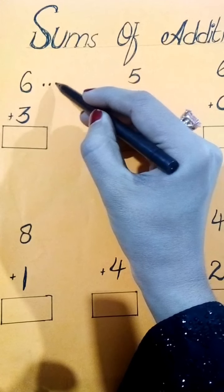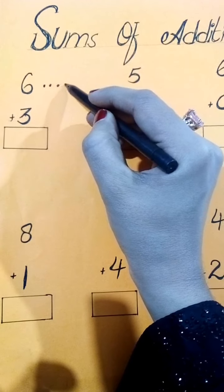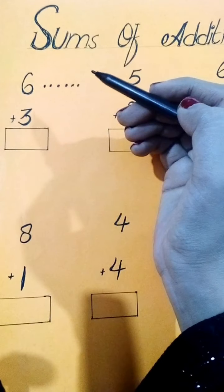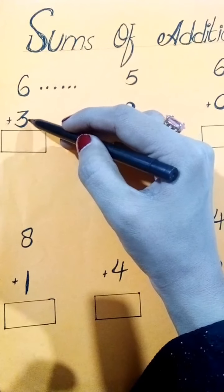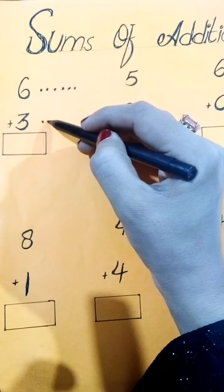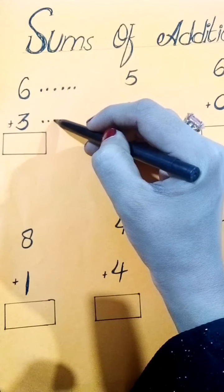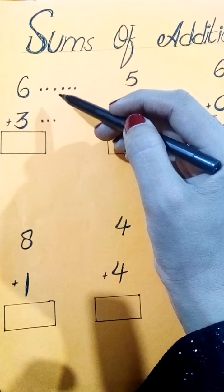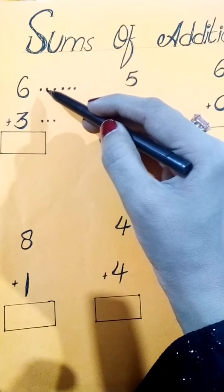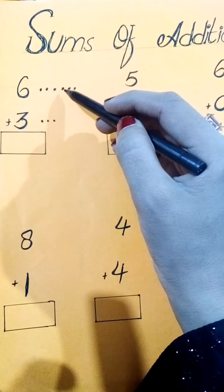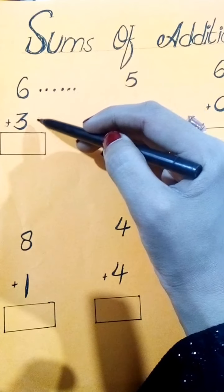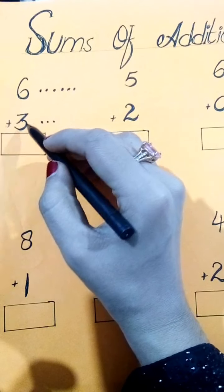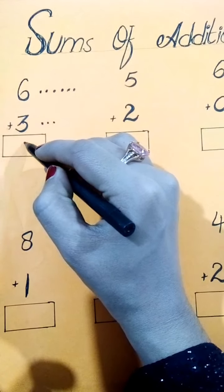One, two, three, four, five and six. And the second number is three — one, two, three. आपने इन सब dots को count करना है। Count करें मेरे साथ: one, two, three, four, five, six, seven, eight, nine। हम यहां लिखेंगे nine।